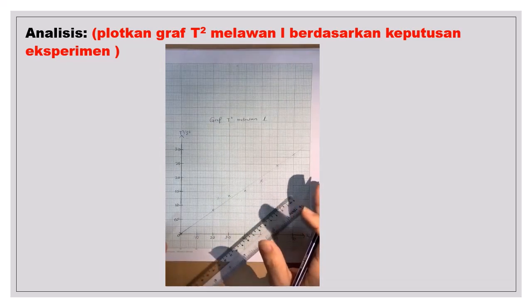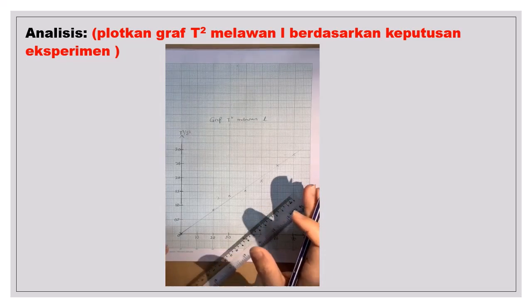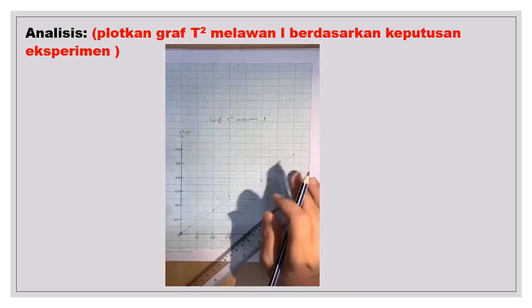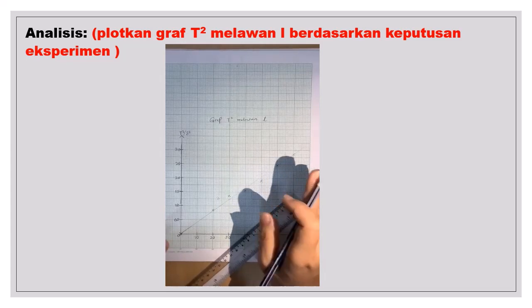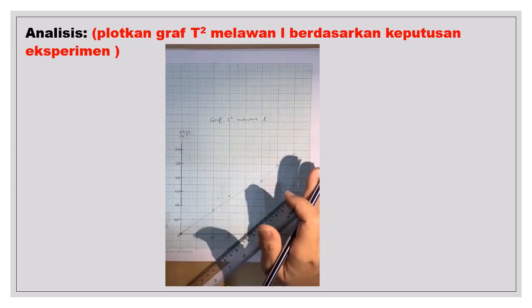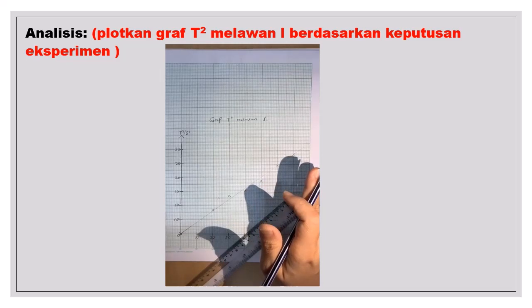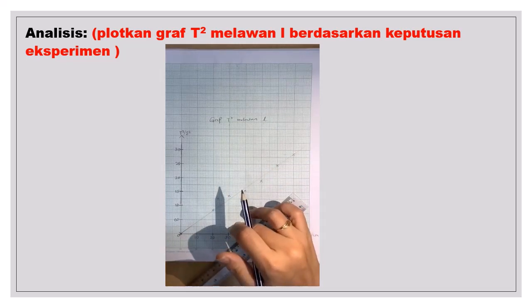Jadi, maksudnya nanti, semasa kamu dapatkan garisan graf, tak semestinya sama dengan cikgu. Tetapi, kamu kena pastikan ia adalah garisan yang seimbang. Kalau kamu sudah pastikan garisan graf kamu seimbang dan bacaan jadual sudah ada. Kemudian, kamu boleh uploadkan graf dan jadual keputusan eksperimen uploadkan ke Google Classroom.